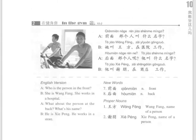课文 2 Text 2. 前面那个人叫什么名字? 他叫王芳，在医院工作。后面那个人呢？他叫什么名字? 他叫谢鹏，在商店工作。New words.